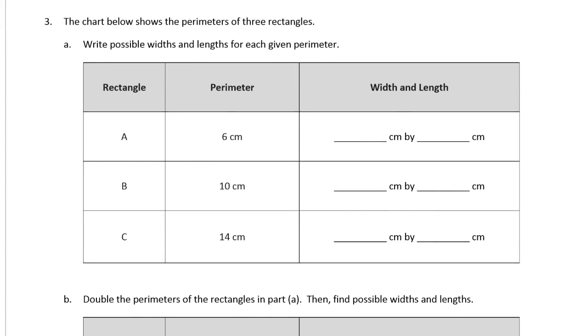The chart below shows the perimeters of three rectangles. Write the possible widths and lengths for each perimeter. So this is using that same idea that we need a width and a length that has to add up to half of the perimeter. For rectangle A, if the perimeter is six, then we're looking for numbers that add up to three. So that would be one and two or two and one. And now we're looking for half of ten, which is five. So how about one and four? And then we're looking for half of fourteen, and that could be one and six, because half of fourteen is seven.